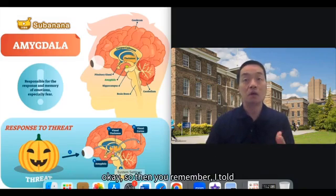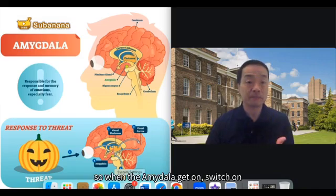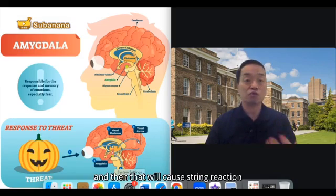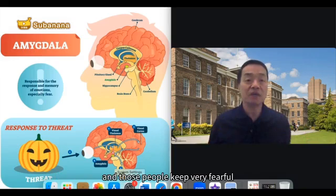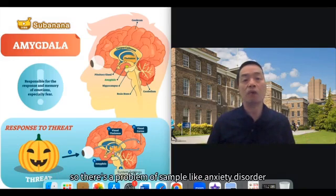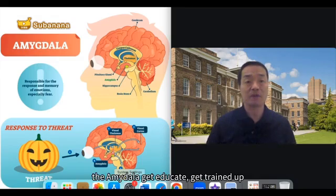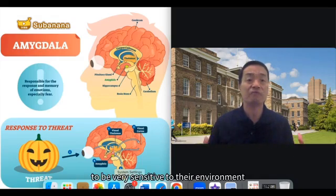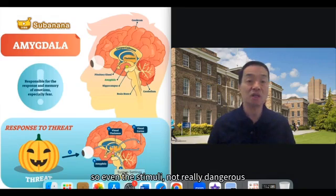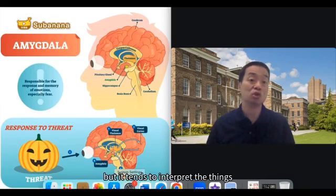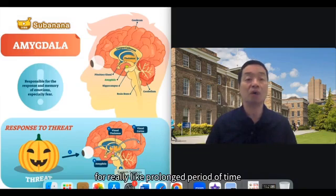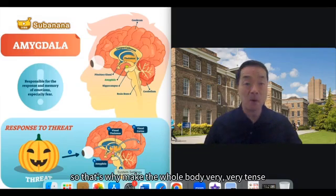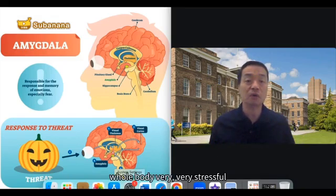When your amygdala stays switched on, that causes a chain stress reaction — stress hormones remain very high, and those people stay very fearful, frightened, or anxious. This is a problem. For people with anxiety disorder, the amygdala gets trained to be very sensitive to the environment, so even when stimuli are not really dangerous or threatening, it still tends to interpret things as threatening and activate the amygdala for prolonged periods. That makes the whole body very tense and very stressed.